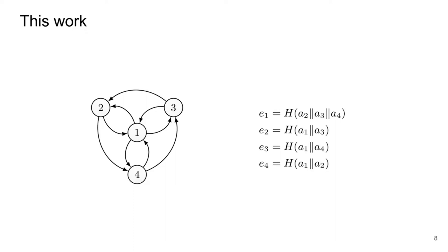For example, given that node 3 has incoming edges from node 1 and node 4, challenge e3 is computed as the hash of a1 and a4. It turns out that doing so will give us a proving system for a composed statement of the sigma protocol predicates. But what composed statement is it? In this example, the composed statement is exactly this monotone formula. Note that the formula is expressed in conjunctive normal form, or CNF, and each disjunctive clause involves literals whose associated nodes form a cycle in the graph.